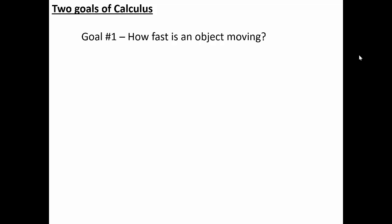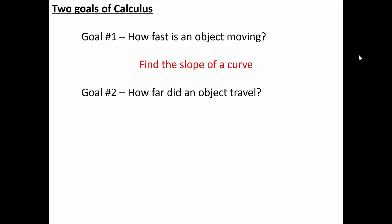One major goal of calculus is to determine how fast an object is moving. The other major goal is to figure out how far the object traveled. The specific skills we're going to look at have to do with finding the slope of a curve and finding the area under a curve. There are three major pillars of calculus: the derivative, the integral, and the limit. The slope of the curve is the derivative; the area under the curve is the integral.